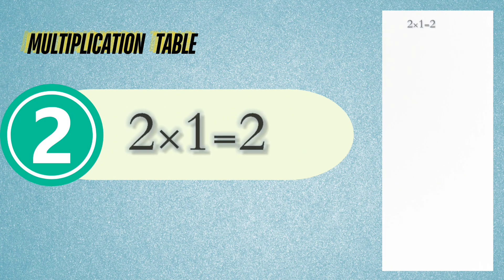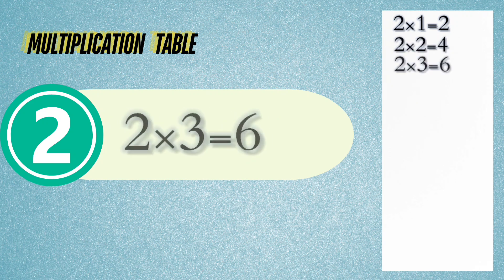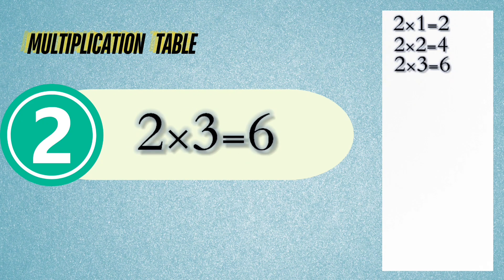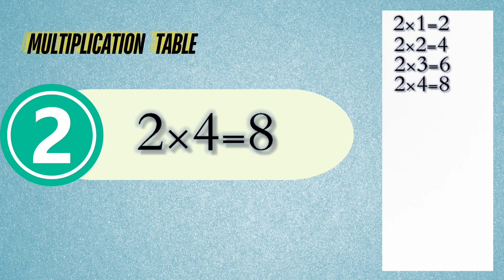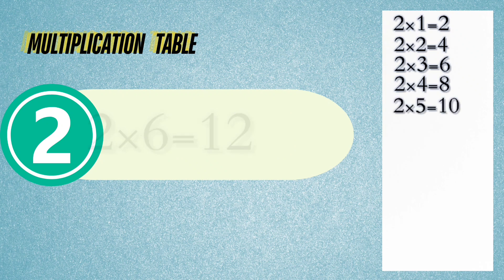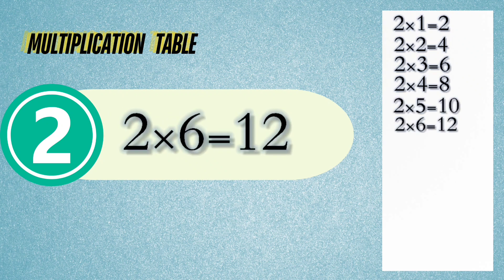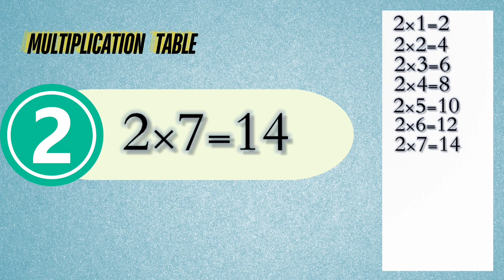2 times 1 is 2. 2 times 2 is 4. 2 times 3 is 6. 2 times 4 is 8. 2 times 5 is 10. 2 times 6 is 12. 2 times 7 is 14.